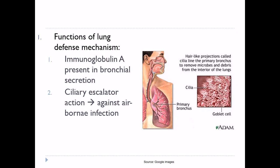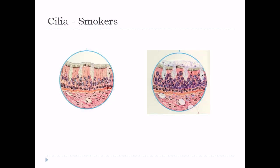Dust particles are often laden with bacteria. These dust particles are caught in the mucus layer at the mucosal surface of the respiratory passage and moved up toward the pharynx by the upward beating action of the cilia, then swallowed. Smoking disturbs ciliary escalator action, which is why there is a higher incidence of respiratory tract infections in smokers than non-smokers.